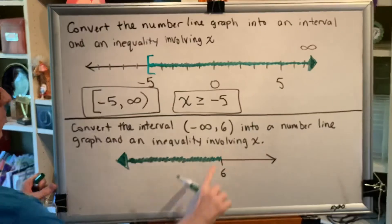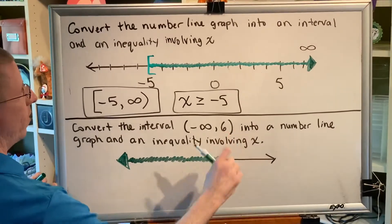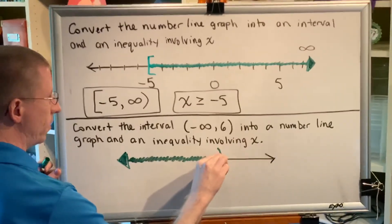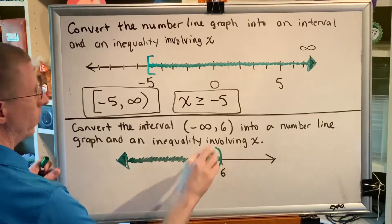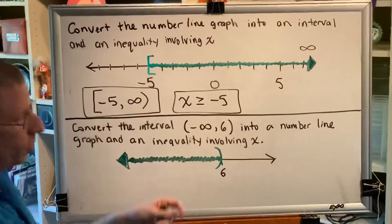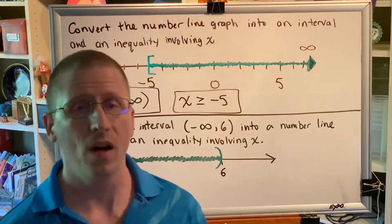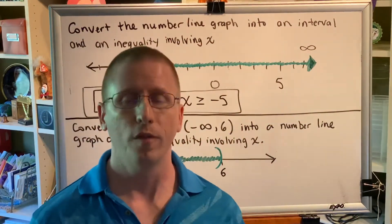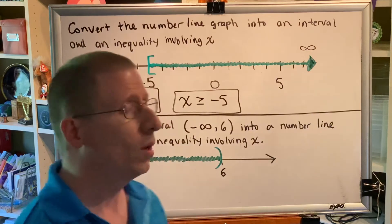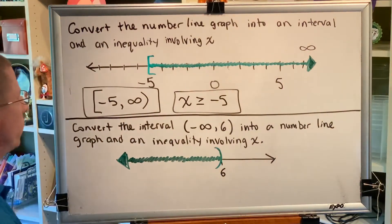Now when I get to 6, I have to decide what symbol to put there. Since there is a parenthesis symbol in the interval, then there will be a parenthesis symbol on the number line as well. This indicates that we want to get as close to 6 as possible but not actually reach it. For example, 5.9, 5.99, 5.999, and so on, but never quite reaching 6.